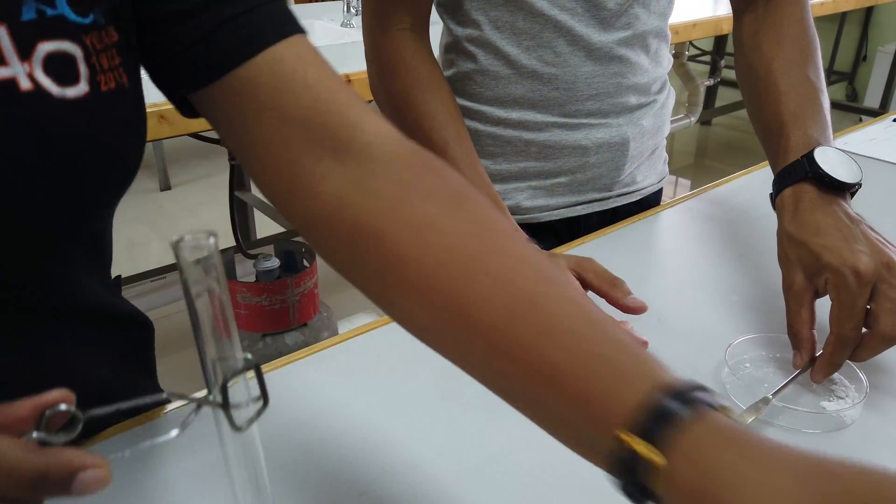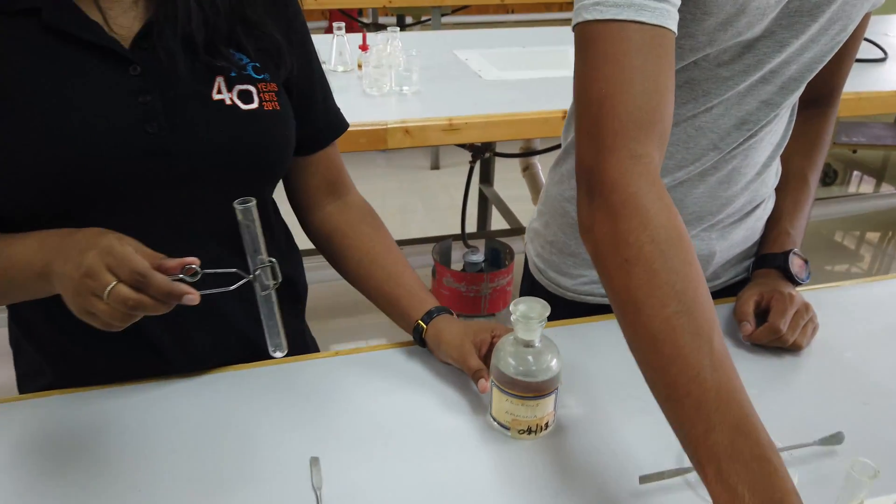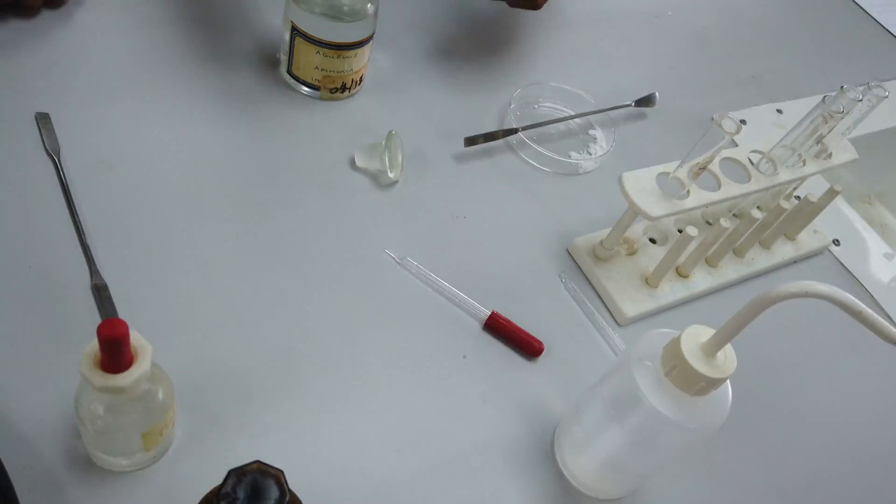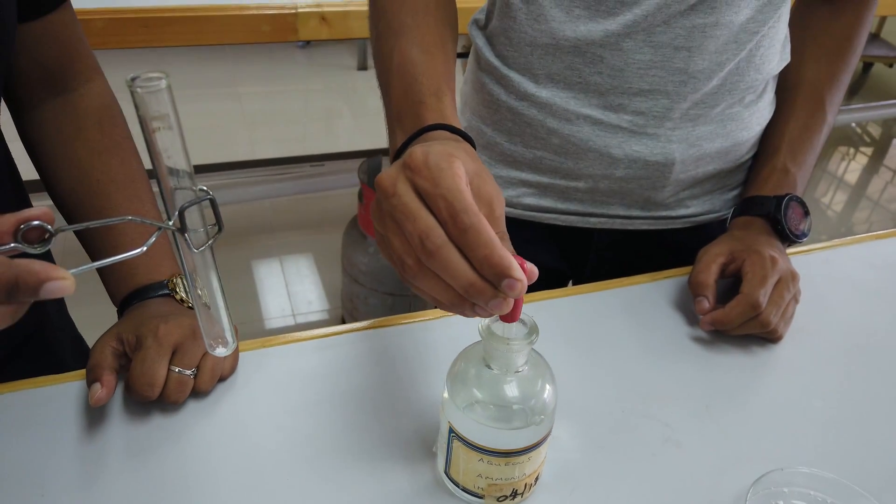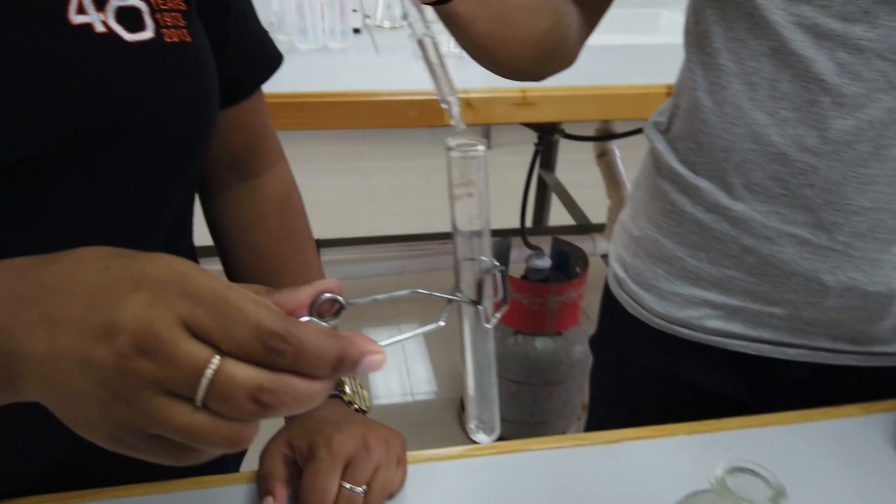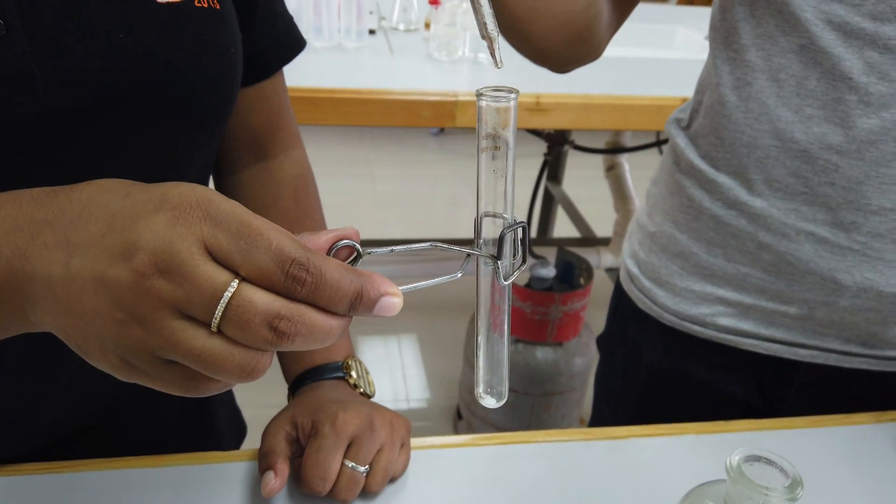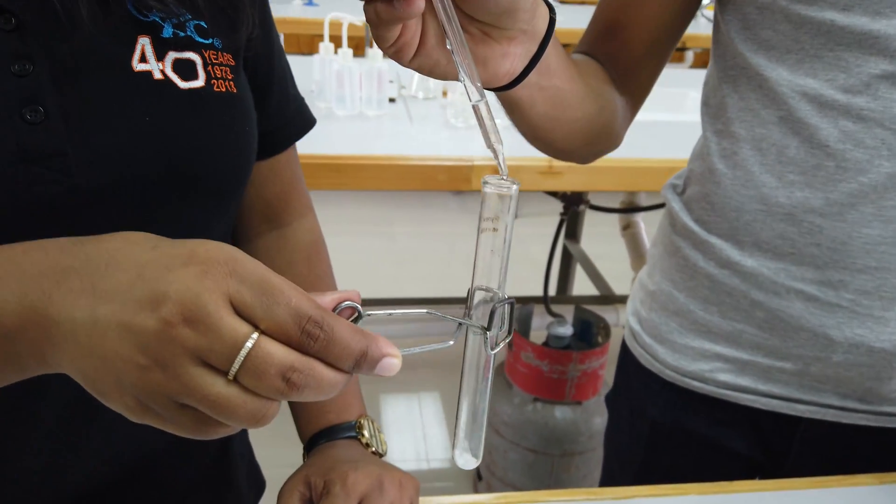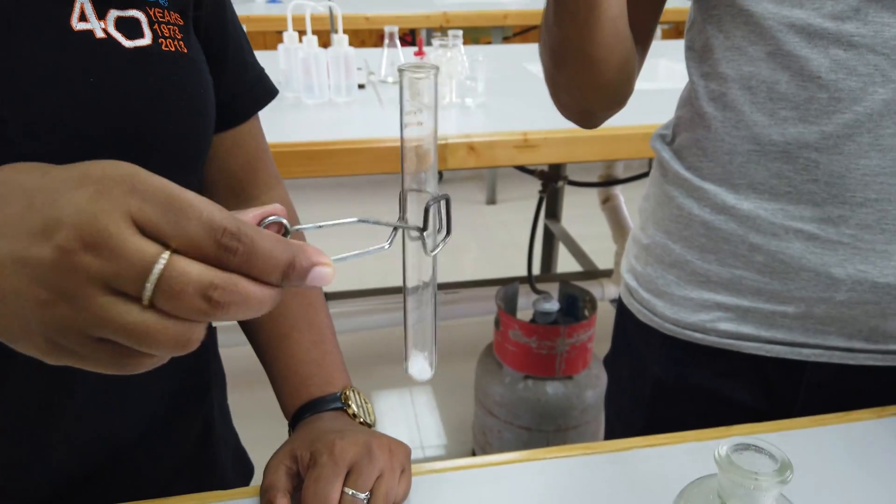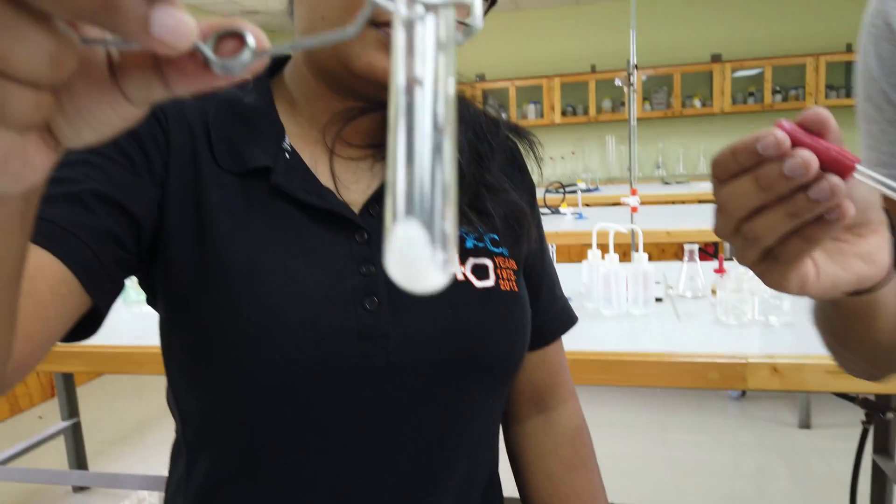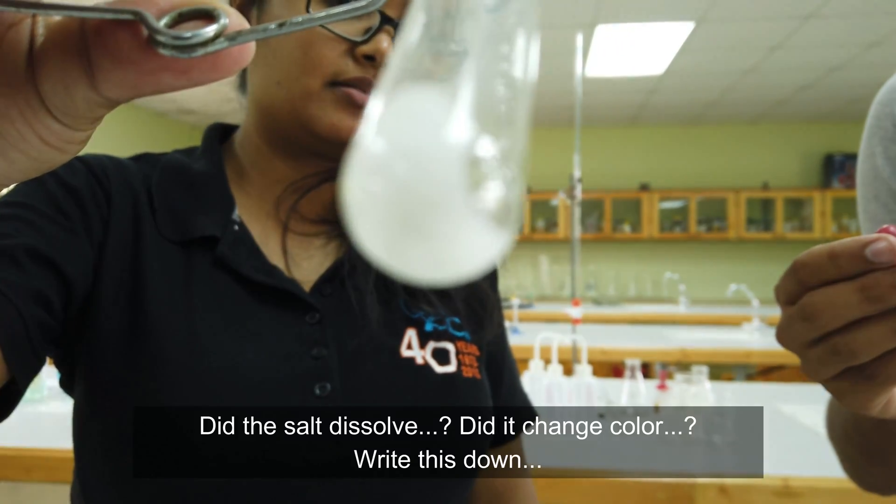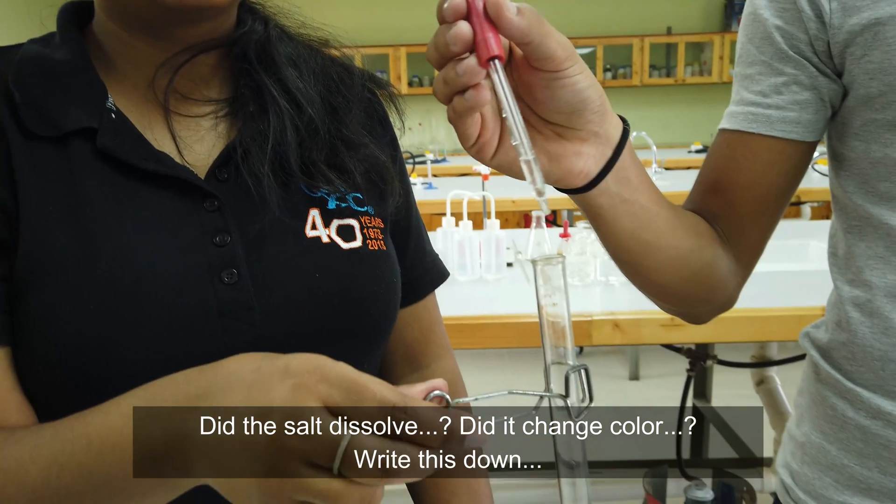This time we're going to add aqueous ammonia, same procedure. But notice we're using a different dropper. You're looking for a change in color and a change in solubility. In this test you definitely see a white precipitate.